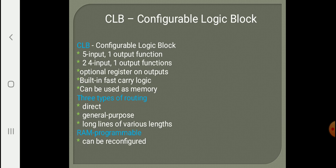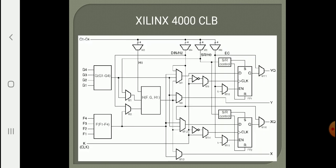There are two modes of operation for the configurable logic block: one is a five-input logic with one output function, and the other uses two function generators with four inputs each and a single output. The 4000 series also has built-in fast carry logic — a carry propagation unit. From the diagram, at the top left you have C1 to C4, which are carry output lines from previous CLB blocks. These carry lines can be forwarded from one block to the other without being processed, so this fast carry propagation unit increases the speed of the addition process.